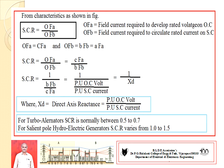OFA is the field current to develop rated voltage on OCC; OFB is the field current required to develop rated current at short circuit. From the graph, OFA is approximately equal to CFA and OFB is approximately equal to BFB. Hence, SCR can be expressed as the ratio of per-unit open circuit voltage to per-unit short circuit current, which can be replaced by 1/XD, where XD is the direct axis reactance — part of the synchronous reactance. Therefore, SCR is inversely proportional to XD.